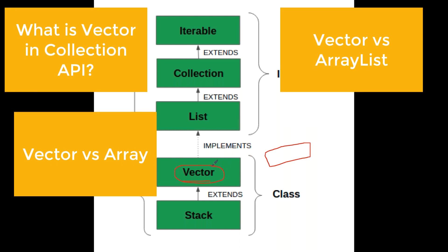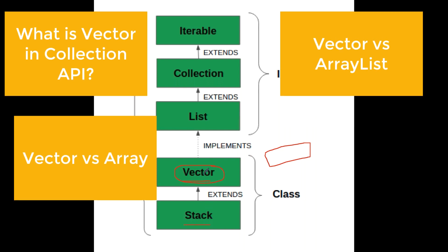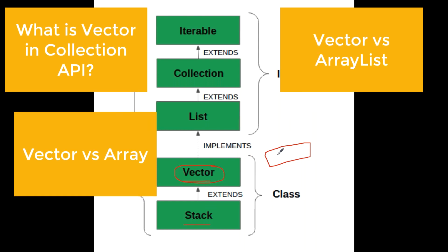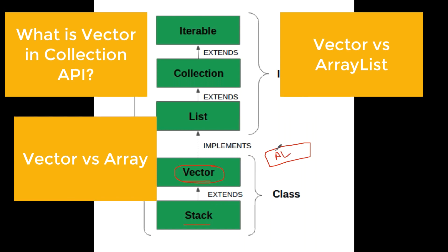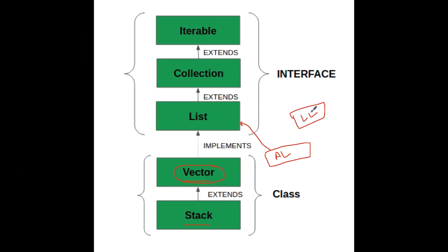Vector is a class which is implementing the list interface, and then we have one Stack class which is extending the Vector class. ArrayList is also implementing this list interface, and LinkedList is also implementing the list interface. Vector and ArrayList are almost the same except for a couple of differences. Vector is very old — available since JDK 1.0.